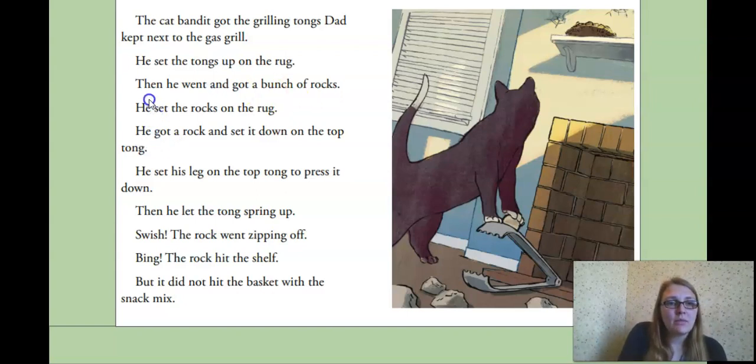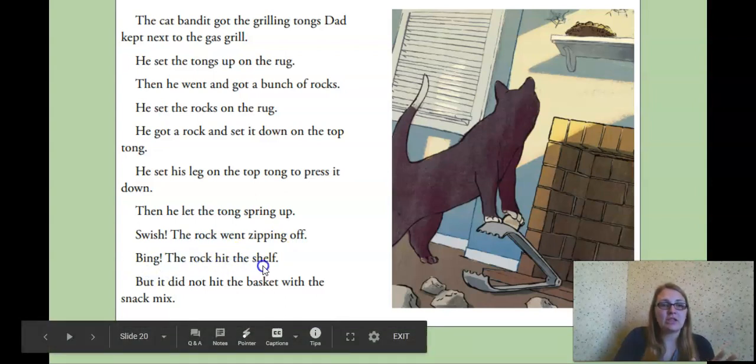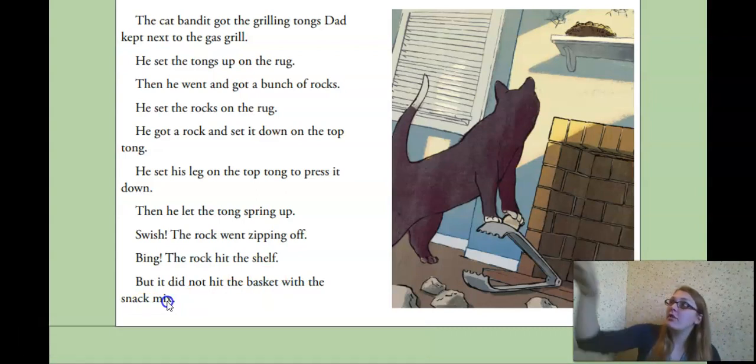He set the rocks on the rug. He got a rock and set it down on top. On the top tong. Okay. So tongs are laying there. He's got a rock on top. He set his leg on the top prong to press it down. Then he let the tong spring up. Swish! The rock went zipping off. Bing! The rock hit the shelf. But it did not hit the basket with the snack mix. What is he doing? He's using the tongs. Putting a rock on top. Pushing it down and letting a rock fling through the air.